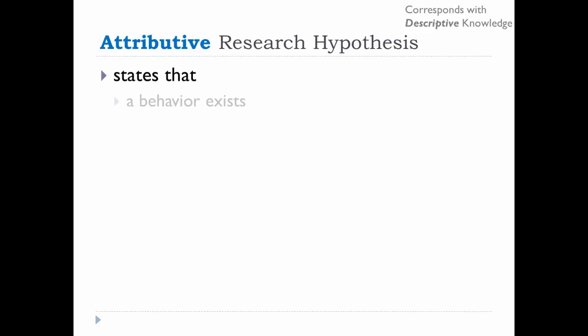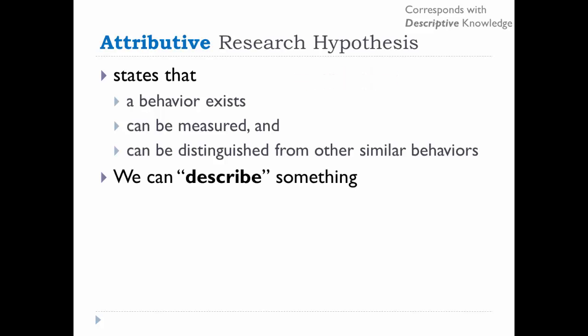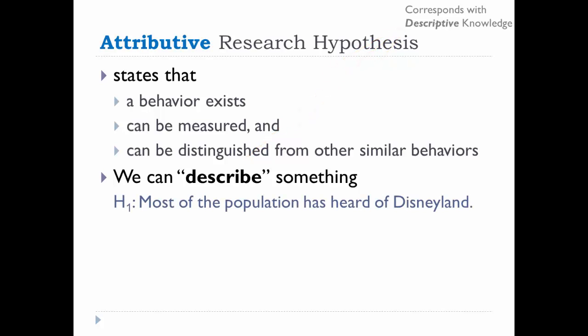Perhaps the easiest of all the hypotheses to understand is the attributive research hypothesis. You would hypothesize that a behavior exists that can be measured and which can be distinguished from other similar behaviors. You are looking for attributes — this allows us to describe something, which is why it corresponds with descriptive knowledge. For example, we can hypothesize that most of the population has heard of Disneyland. The assumption is that knowledge of Disneyland exists, that we can measure it by asking survey questions of the general population, and that knowledge of Disneyland is discrete and would not be confused with another concept.